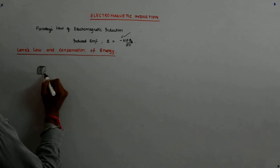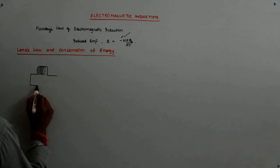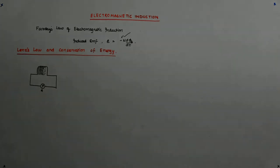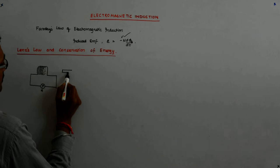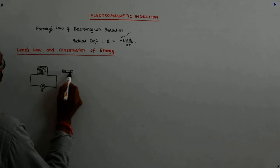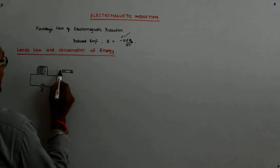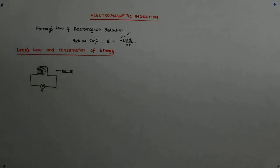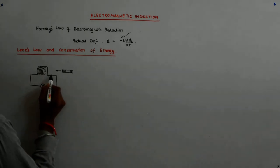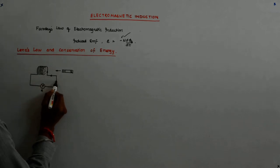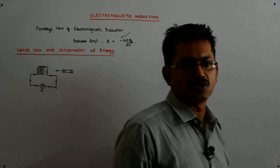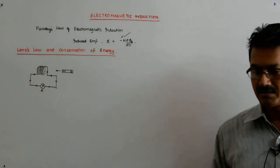If we remember, I had drawn the coils something like this, and there was a galvanometer here. I had started with a magnet whose north pole was on one side and south pole on the other. The moment this magnet moved into the coil to the left, the current flowed in one direction — drawn in black — and when I was pulling it out, it was drawn in red.